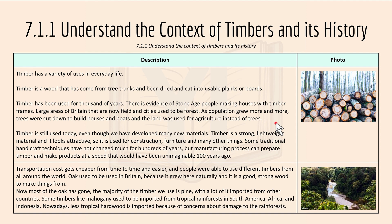There's evidence of Stone Age people making houses with timber frames. Large areas of Britain that are now fields and cities used to be forest. Obviously, deforestation occurred — as the population grew, more and more trees were cut down to build houses and boats, and the land was used for agriculture instead. Timber is still used today, even though we have developed many new materials.